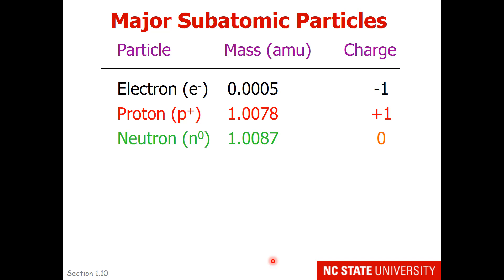Through subsequent experiments, scientists were able to understand quite a bit about subatomic particles. We're going to stop at electrons, protons, and neutrons in this class. There are actually smaller subatomic particles called quarks, but an understanding of electrons, protons, and neutrons will be sufficient for you to understand a lot of the chemistry associated with the atom.